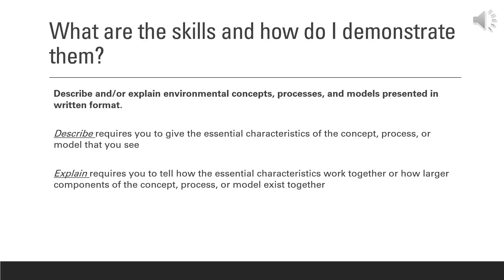Let's go through the skills and how you would demonstrate those skills. The first skill for question one is to describe and/or explain an environmental concept, process, or model presented in written format. 'Describe' requires you to give the essential characteristics of the concept, process, or model. 'Explain' requires you to tell how the essential characteristics work together or how the larger components of the concept, process, or model exist together. This skill requires you to demonstrate understanding of the overall environmental concept and the components that make the model functional in an environmental system.